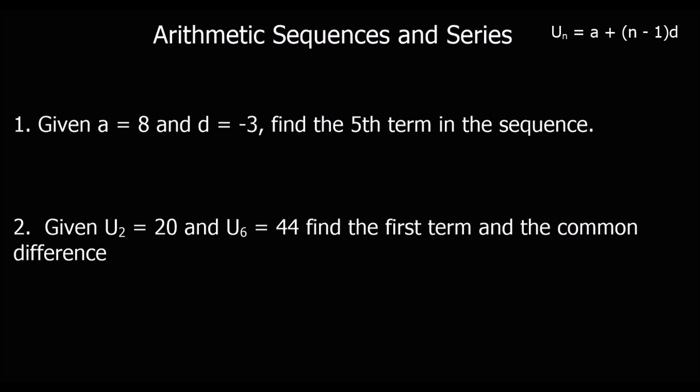Okay, so the same sort of questions. You can pause the video and give them a go. So a is 8, d is minus 3. We need to find the fifth term. The fifth term is called u5. It's a, plus 5 minus 1, times d, which is minus 3. 8 plus 4 times minus 3. And 8 minus 12. 8 minus 12 is minus 4.